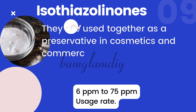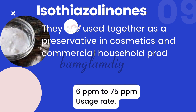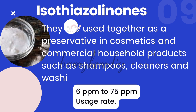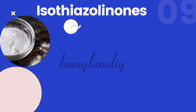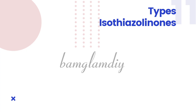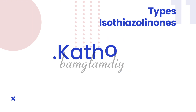The third class is the isothiazolinones. They are not very popular in the market. There is methylisothiazolinone and other types, but they are not very popular. The usage rate is from 6 ppm to 75 ppm and they are sulfur-containing compounds. You see them in most household cleaning products, shampoos, dishwashing liquids, and some cosmetics, but not much. One well-known example is Kathon.